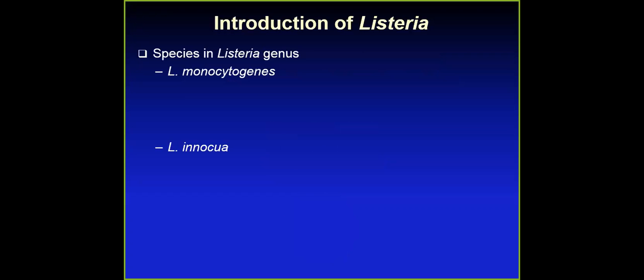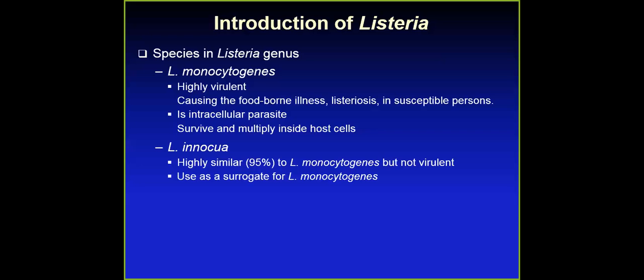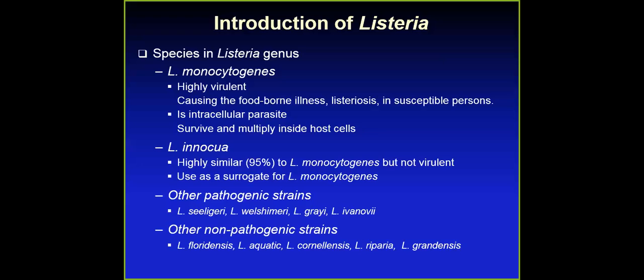We'll be talking about two Listeria species. Most of you are familiar with Listeria monocytogenes. Listeria innocua is physically used as a surrogate. We know Listeria monocytogenes is highly virulent, causing a lot of foodborne illness, and it is intracellular — meaning it can grow inside our cells. Listeria innocua is very similar to Listeria monocytogenes but is not pathogenic, which is why we use it as an indicator organism. The take-home message is: not everything in Listeria is pathogenic. Only Listeria monocytogenes is highly virulent.